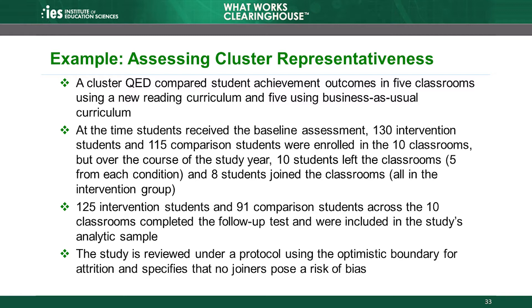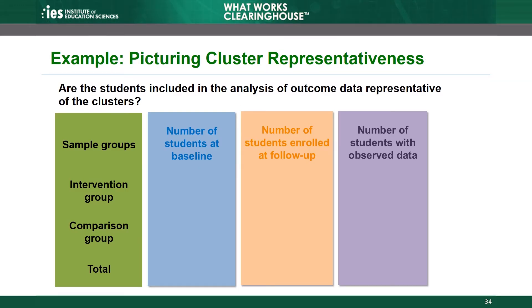Are the students included in the analysis of outcome data representative of the clusters? Let's organize the information from the example to sort out what we know about the number of students at baseline, at follow-up, and in the analytic sample. For demonstrating cluster representativeness, we need to know how many students were in the clusters at follow-up. In the intervention group, 130 students were in the classrooms at baseline, but 5 students left and 8 students joined — a net gain of 3 students — giving us 133 enrolled in the intervention group classrooms at follow-up. In the comparison group, 115 students were in the classrooms at baseline and 5 students left, giving us 110 enrolled in comparison group classrooms at follow-up. This means 245 students were in the classrooms at baseline and 243 at follow-up.